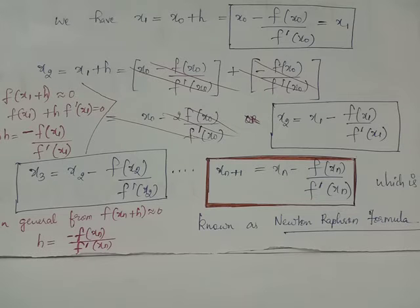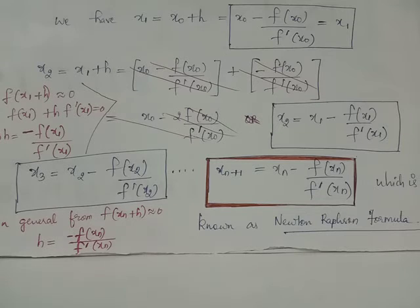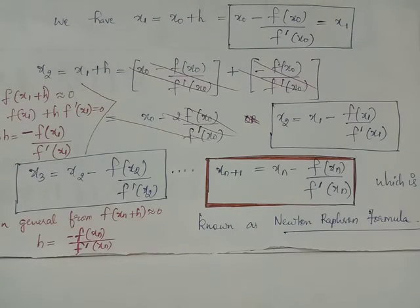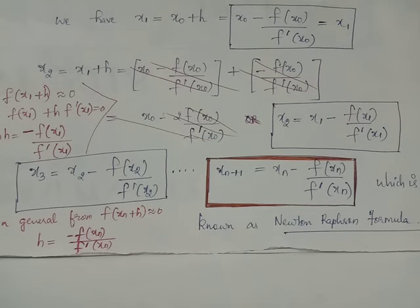We have x1 = x0 + h, and h = -f(x0) / f'(x0), from which we obtain x1 = x0 - f(x0) / f'(x0). We have substituted h = -f(x0) / f'(x0) to obtain this first approximation to the root alpha.